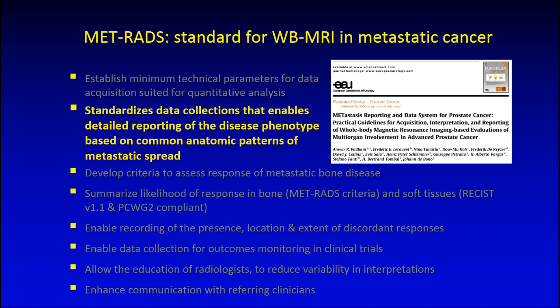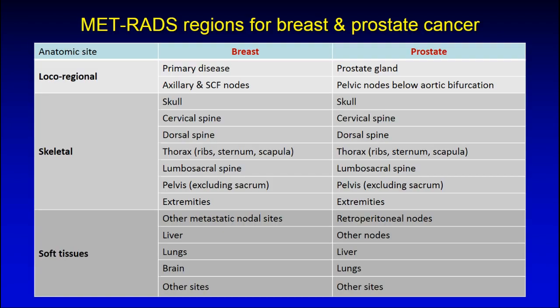The second aim of the METRADS system is to enable standardized collection of the disease phenotype based on the common anatomical spread of the disease. For breast cancer, the local regional disease is the primary disease, axillary and SCF lymph nodes. For prostate cancer, it is the prostate gland and pelvic lymph nodes up to the aortic bifurcation. Skeletal sites are the same for both breast and prostate protocols, but the soft tissue spread differs. For prostate: retroperitoneal lymph nodes, other nodes, liver, lungs, and other sites. For breast cancer: liver, lungs, brain, and other sites.